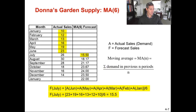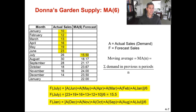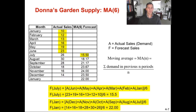To calculate the six-month moving average for January, we add up December, November, October, September, August, and July — six months of previous data — and when we divide by six, that gives us a forecast of 22 for January.